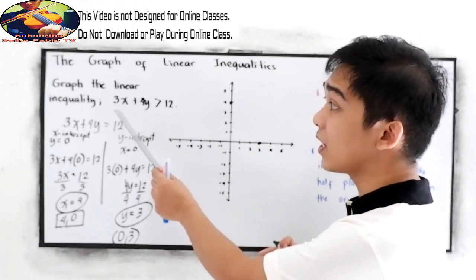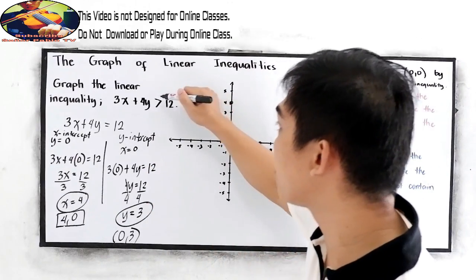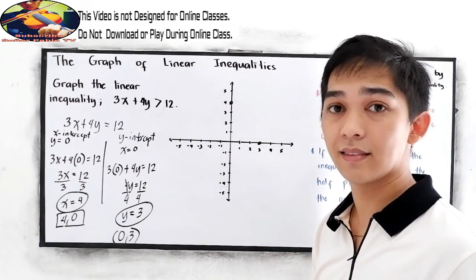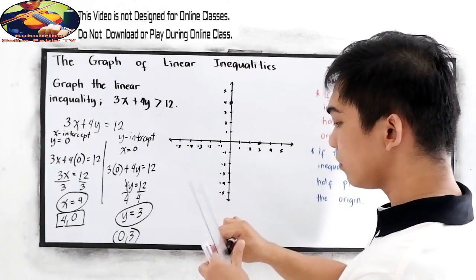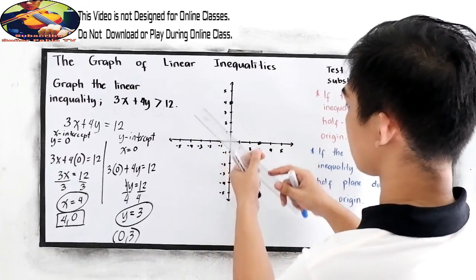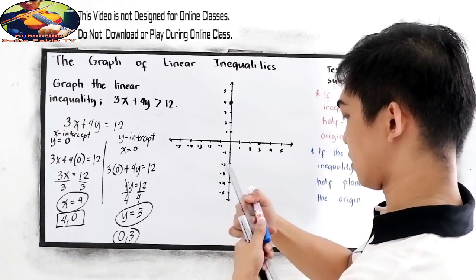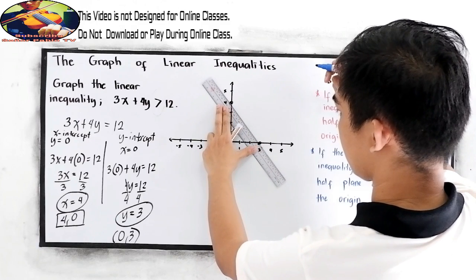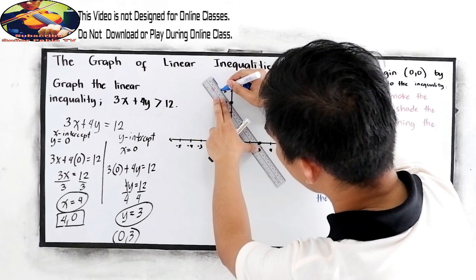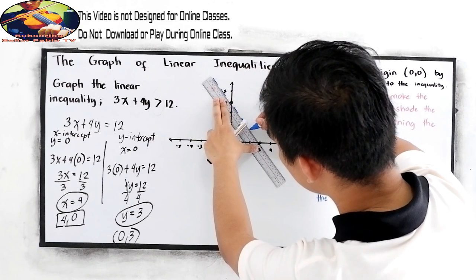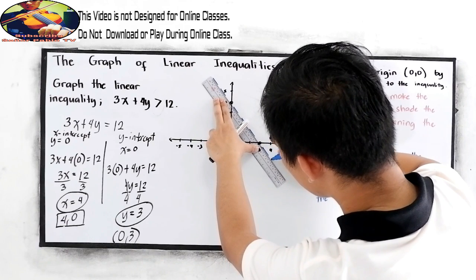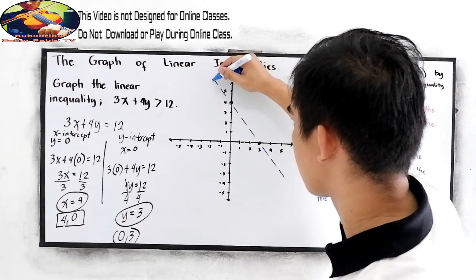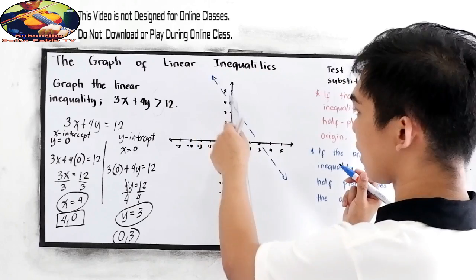But since we are in the linear inequality and we have this symbol greater than, since that is greater than, we're going to use the broken line. A broken line means this is our line.